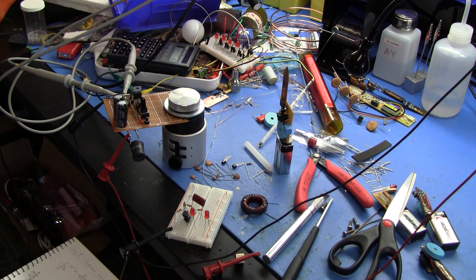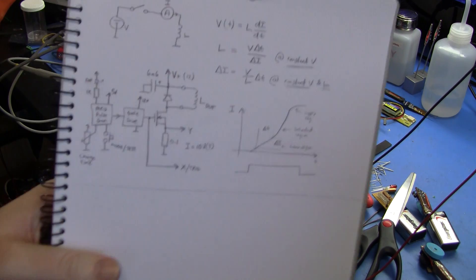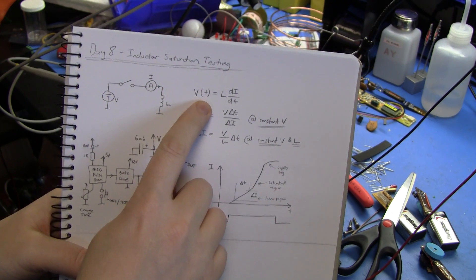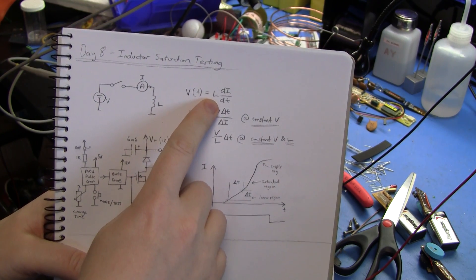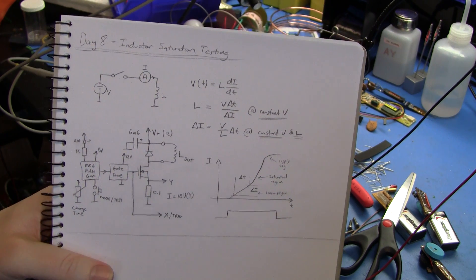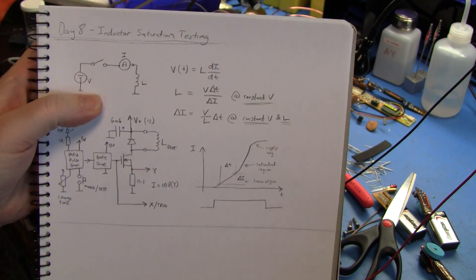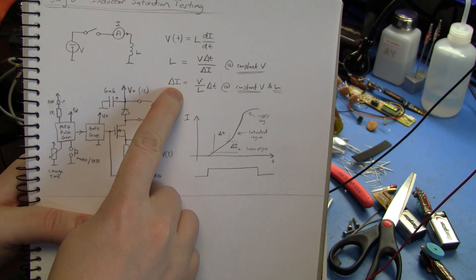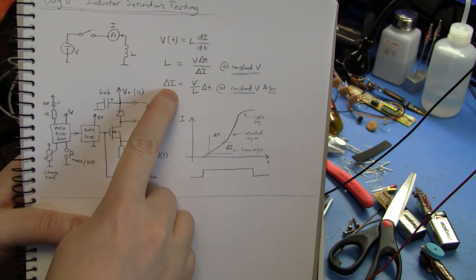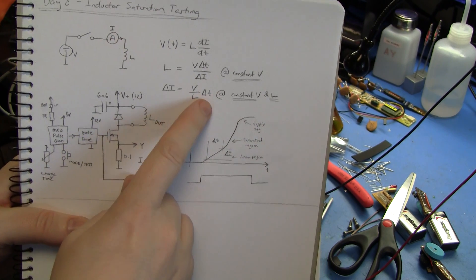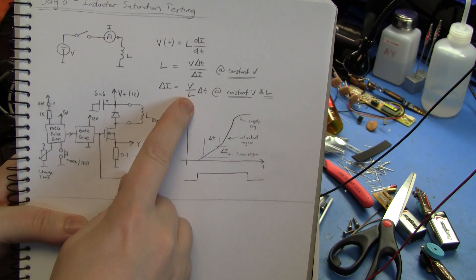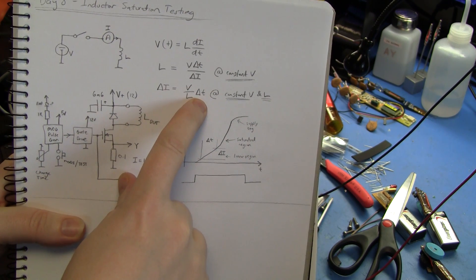So it's pretty straightforward. Inductors 101 is basically the voltage across an inductor is proportional to the inductance times the time rate of change of the current through it, so that allows us to come up with this expression for the change of current through an inductor is proportional to the voltage inversely proportional to the inductance and proportional to the time.